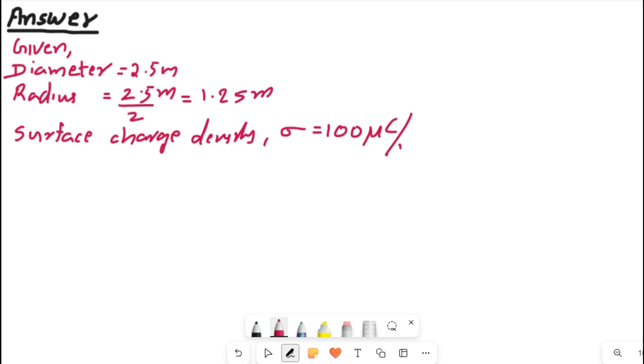So sigma is equal to 100 micro coulomb per meter square. This micro coulomb we will write in SI unit format, that is 100 into 10 raised to minus 6 coulomb per meter square. Finish.